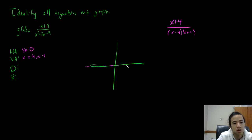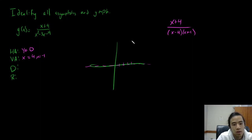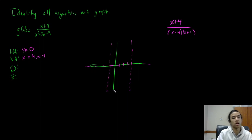Remember, you plot asymptotes using dashed lines. We have one at x equals 4, something like this, and then x equals negative 1. So there are our asymptotes.